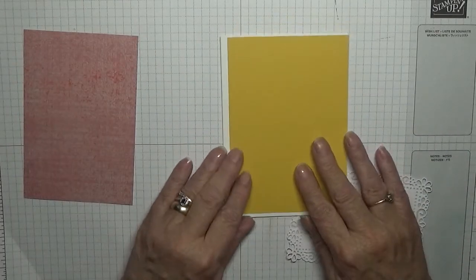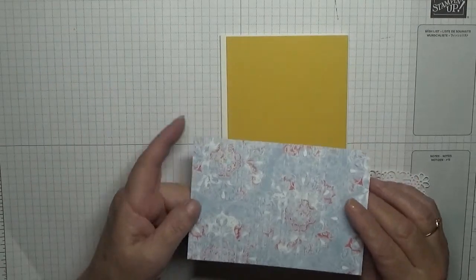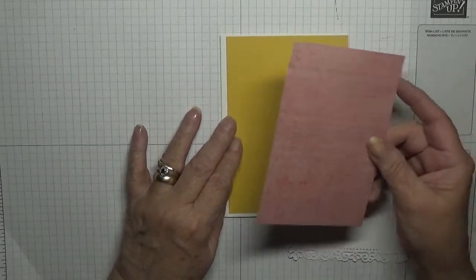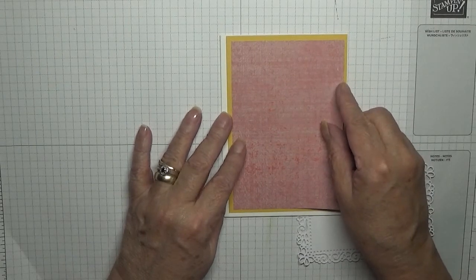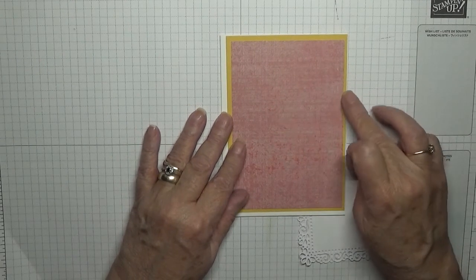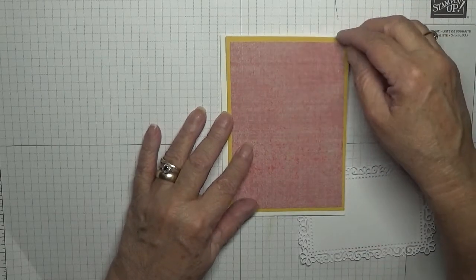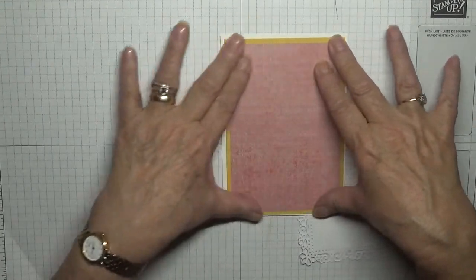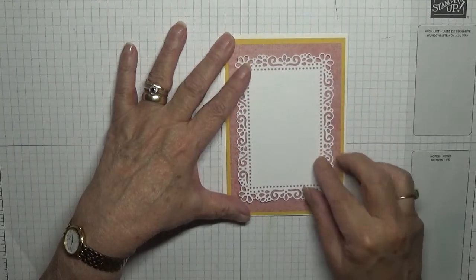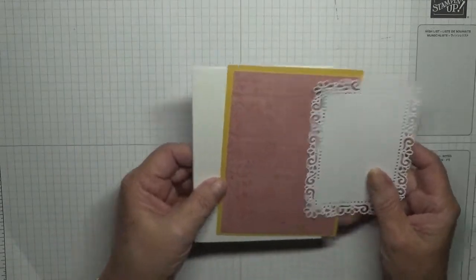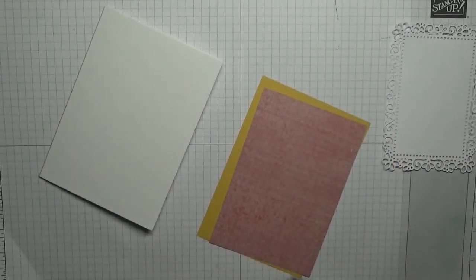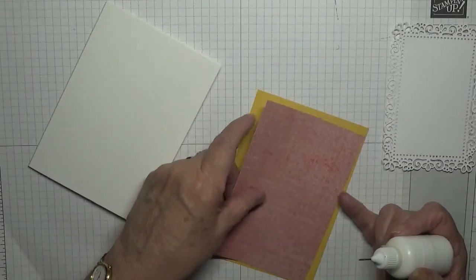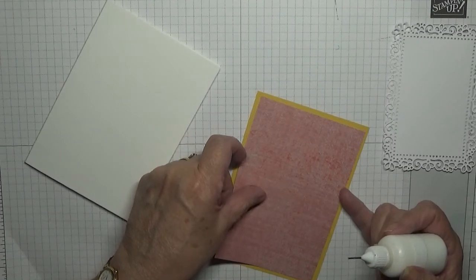Then I have a piece of DSP from last year's celebration. It was the free paper and I'm using the plainer side on the back. I have nothing that actually goes with Bumblebee but I thought this goes quite well. This is five and five eighths by three and seven eighths, and this is five and three eighths by three and five eighths.